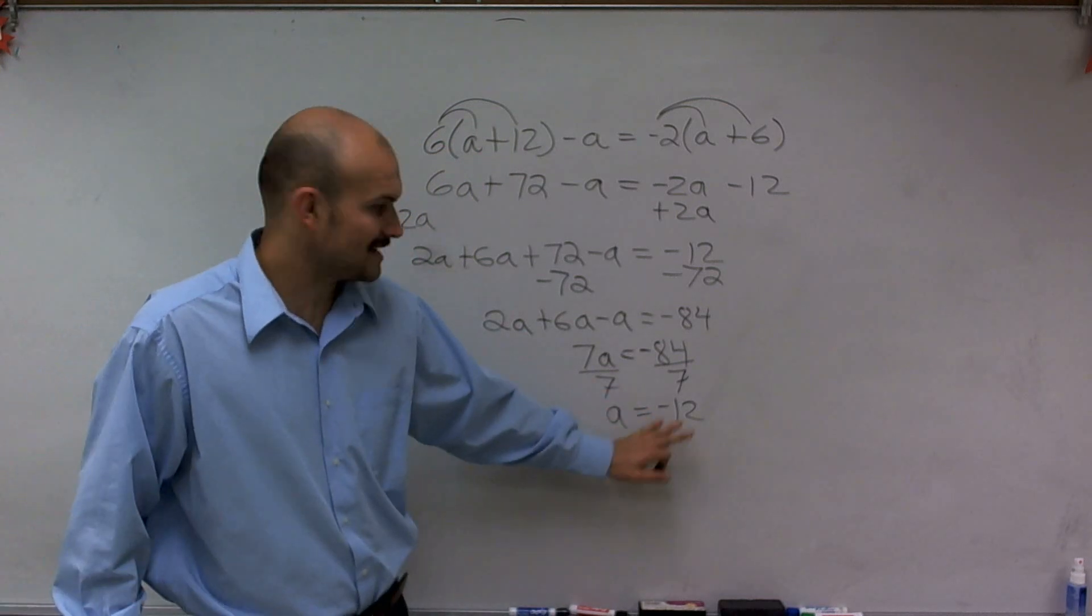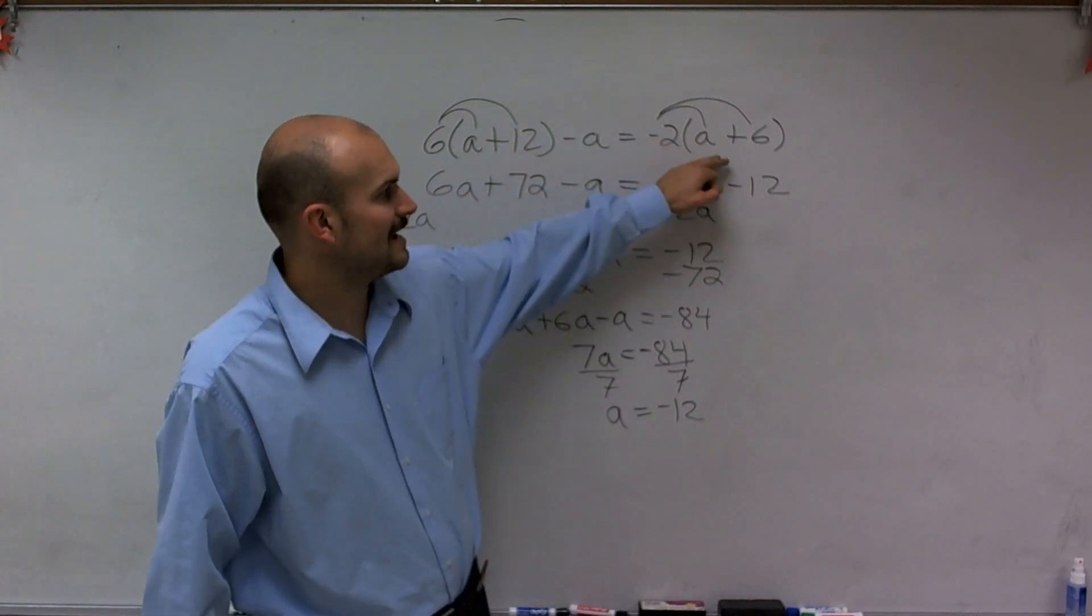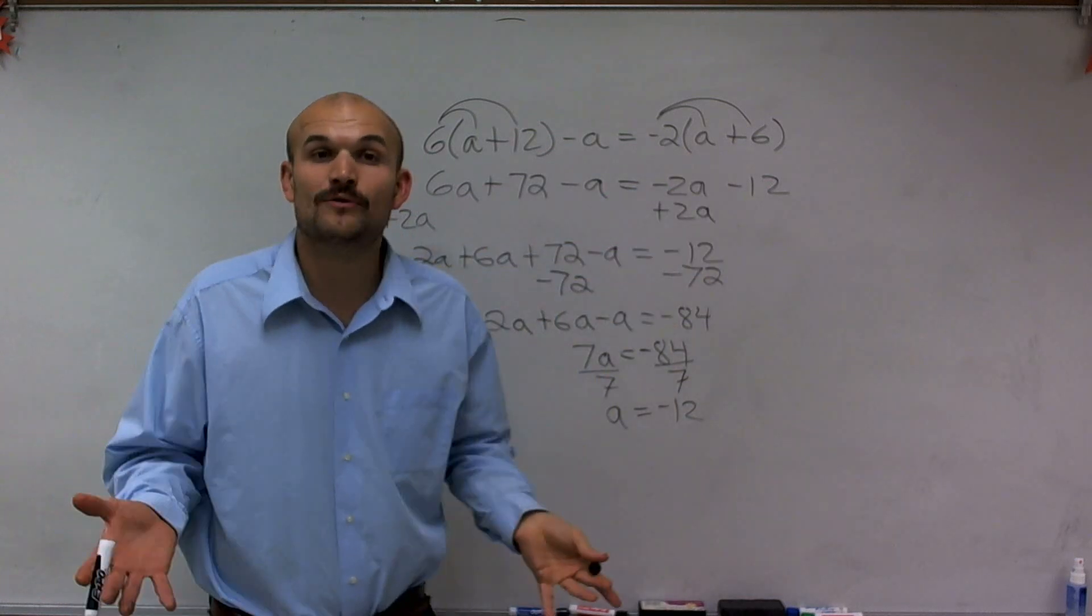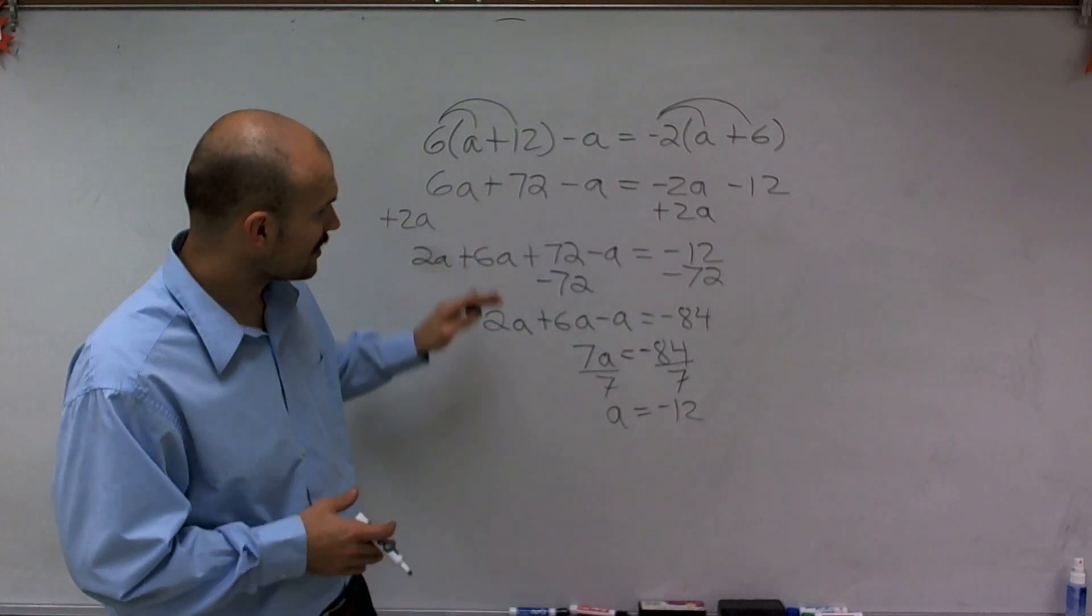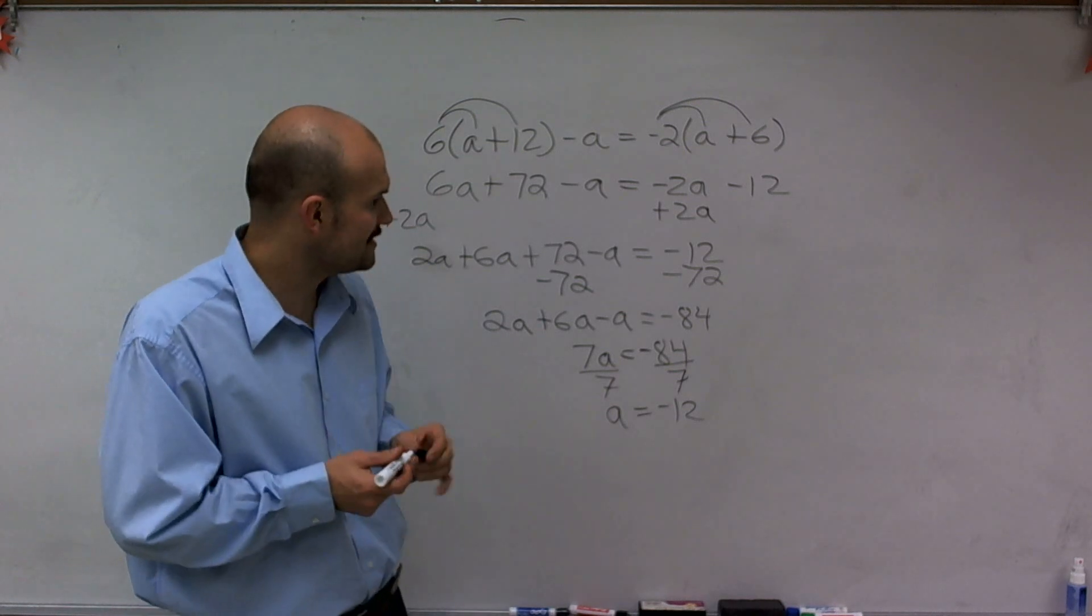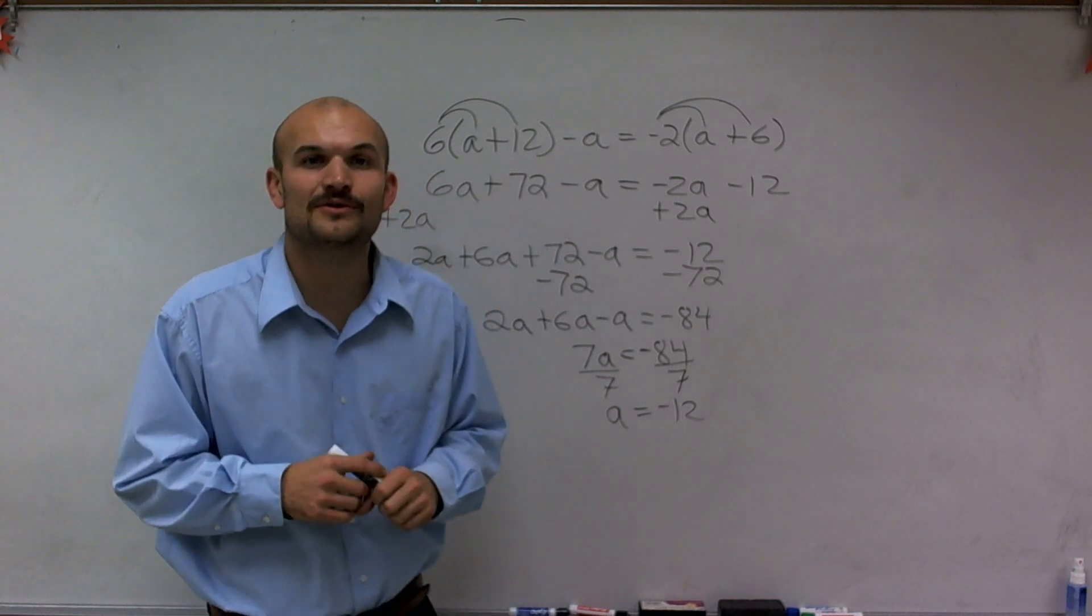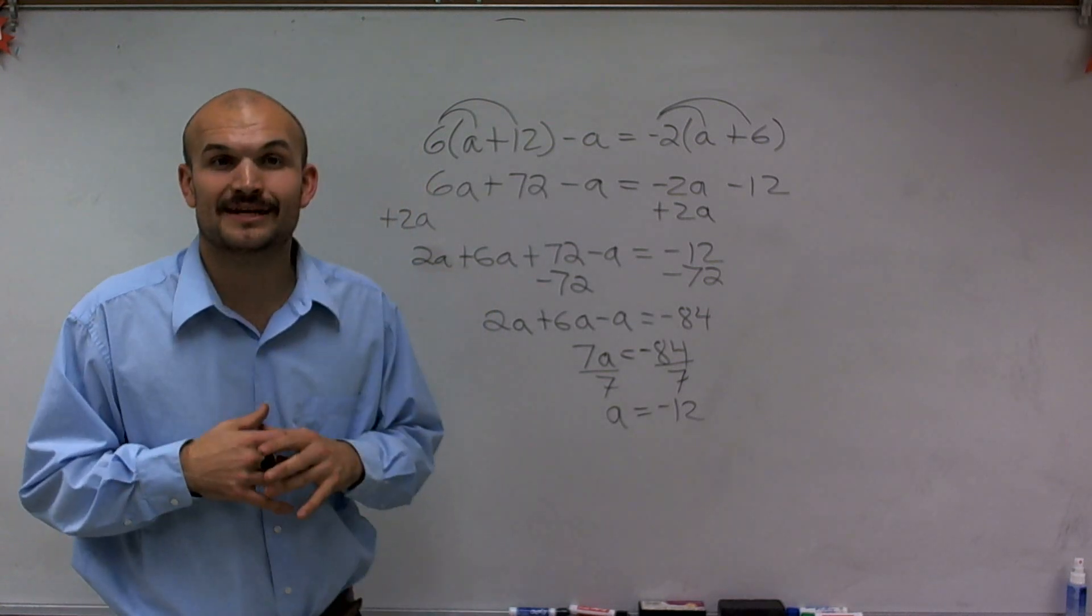Now to check my answer, I can always plug in negative 12 back into my value of a into this top equation and see if my equation is still going to equal each other. But looking at my operations, and to keep this video kind of short, I can see that it looks like my work is correct, and therefore, I'll go with the solution of this equation is a equals negative 12. Thanks.